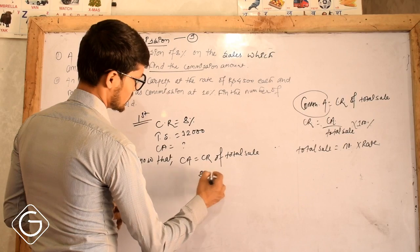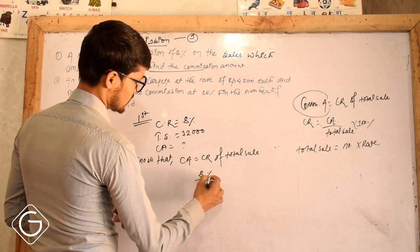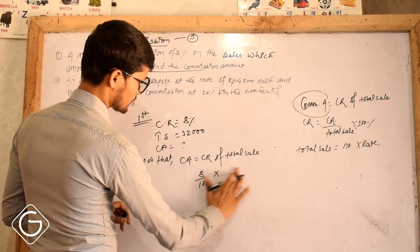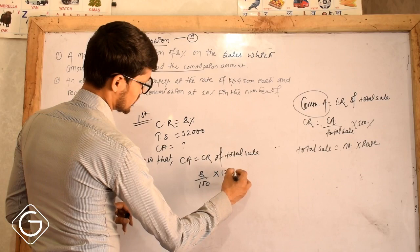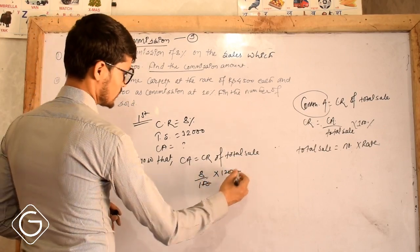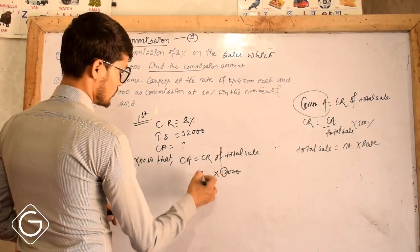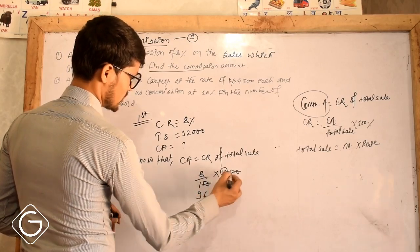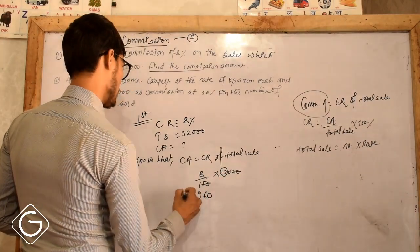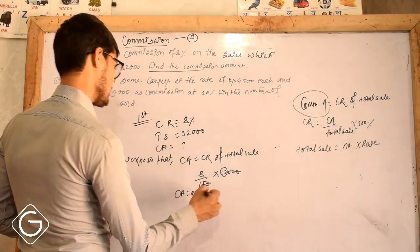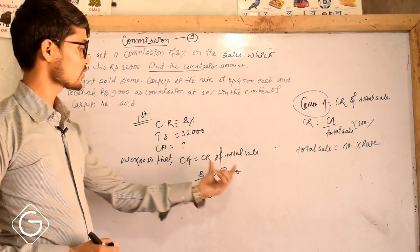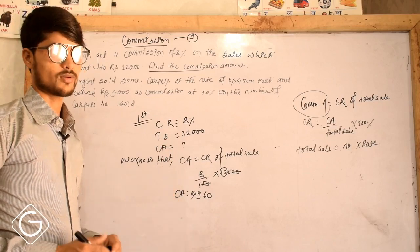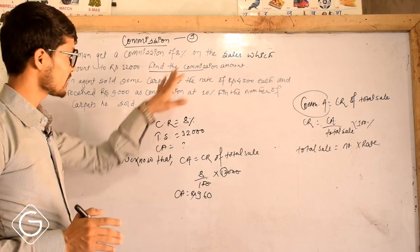CA is equal to CR of total sale. So CR 8% — divide by 100, into total sale 12,000. Zeros cancel: 8 into 12 equals 96. So the commission amount is 960.